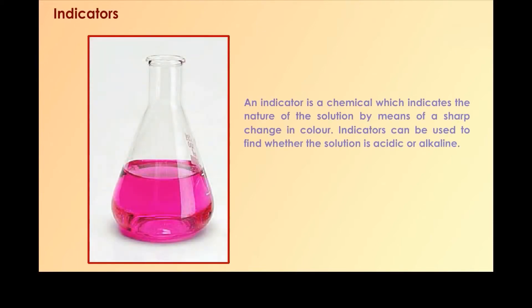Indicators. An indicator is a chemical which indicates the nature of the solution by means of a sharp change in color. Indicators can be used to find whether the solution is acidic or alkaline.